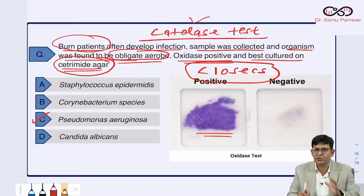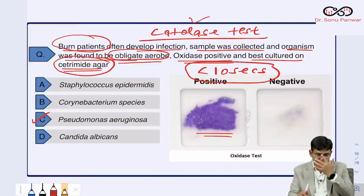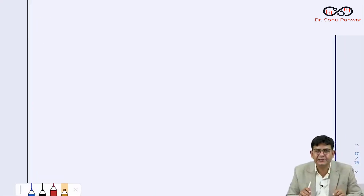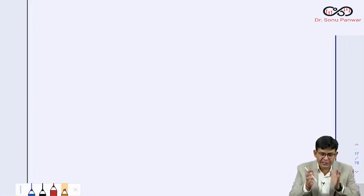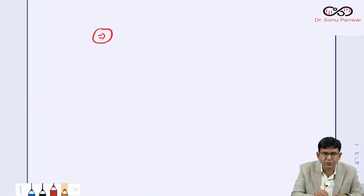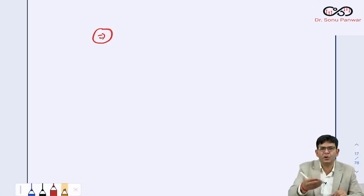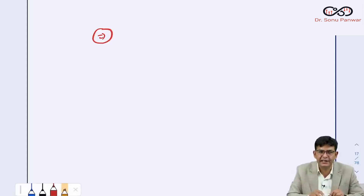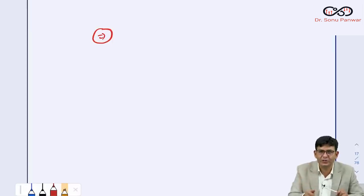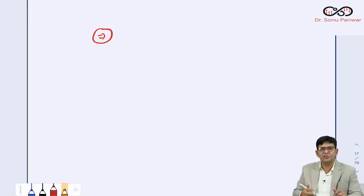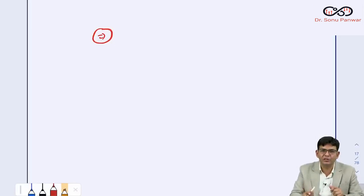Pseudomonas grows best on cetrimide agar because cetrimide itself is a disinfectant, and Pseudomonas loves to grow on disinfectants. It can even grow in Savlon and Dettol if exposed for a long time — making it a uniquely resistant organism.